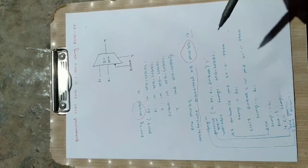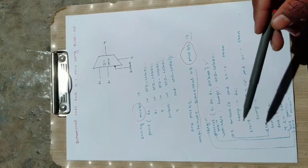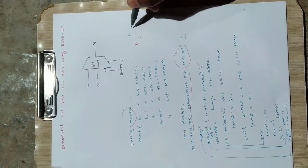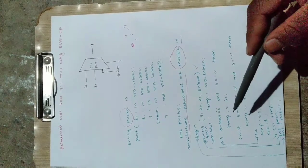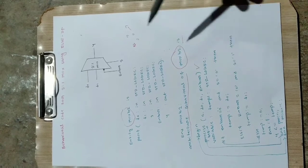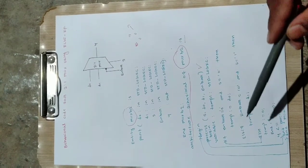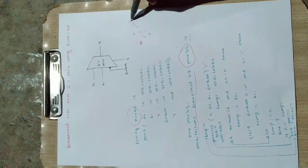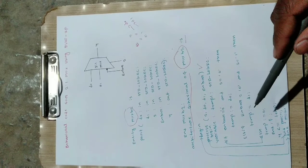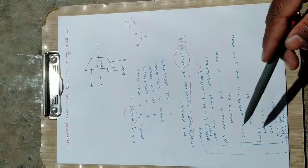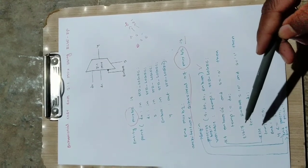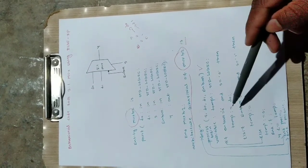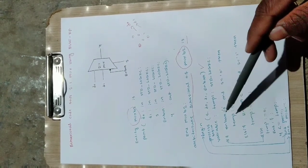Now we write an if statement: if enable_bar is equal to 0 and S is equal to 0, that is if both enable and S are 0, then temp is assigned D0 — meaning D0 will be given to the output. And else if enable_bar is equal to 0 and S is equal to 1, then temp is assigned D1. If the first condition satisfies, it executes and exits the loop; otherwise it checks the else-if condition.